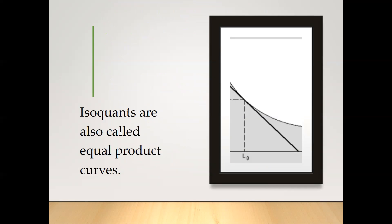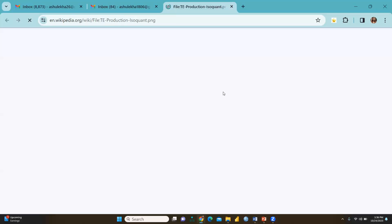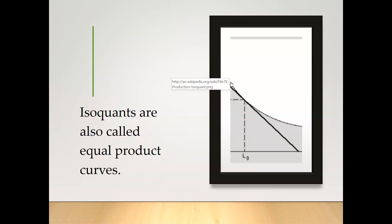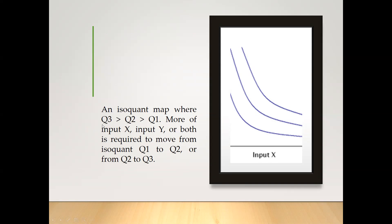Isoquants are also called equal product curves. On the y-axis we have capital and on the x-axis we have labor. In an isoquant map, q3 is greater than q2 and q2 is greater than q1. More of input x, input y, or both is required to move from isoquant q1 to q2, or q2 to q3. So q1, q2, and q3 reflect increasing quantities of inputs.